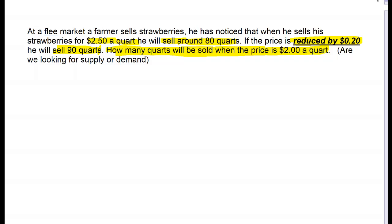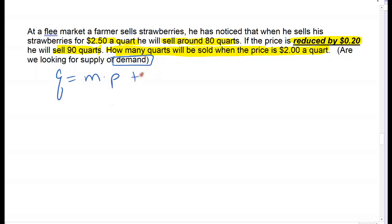He's selling 80 quarts, he's selling 90 quarts. That means the buyers are buying 80 quarts at $2.50. When the price drops by 20 cents to $2.30, people are buying 90 quarts at this flea market. So this is a demand case. The equation is: quantity equals slope times price plus my y-intercept, with a subscript d representing demand.